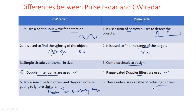These are the main differences between CW radar and pulse radar. In most question papers it might ask for two to three marks, so you should definitely try to cover four to five points as differences between CW radar and pulse radar. Thank you.